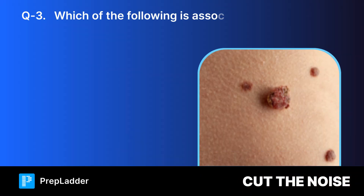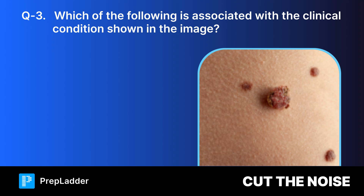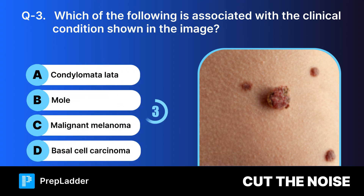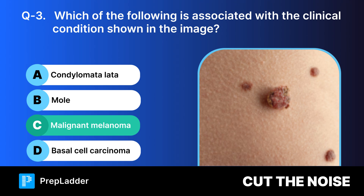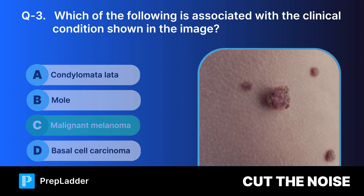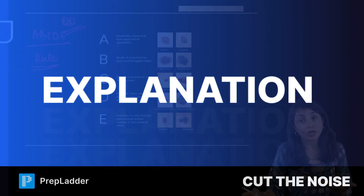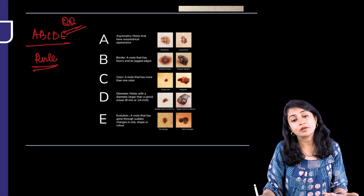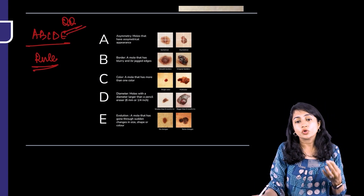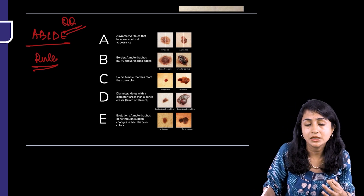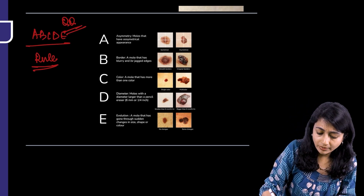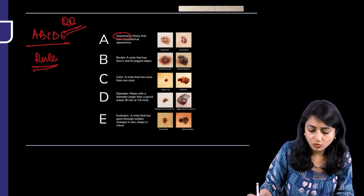Question 3: Which of the following is associated with the clinical condition shown in the image? The correct answer is malignant melanoma. To identify melanoma, you follow the ABCDE rule. A means asymmetry — moles that have an asymmetrical appearance.